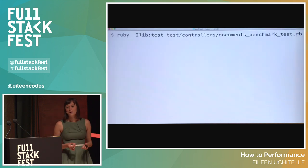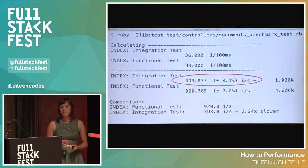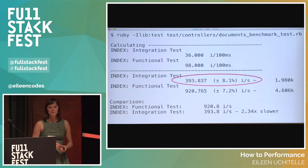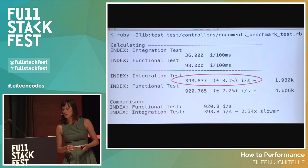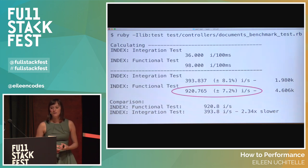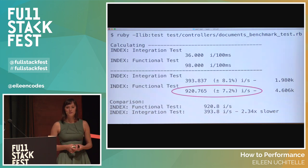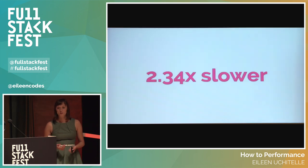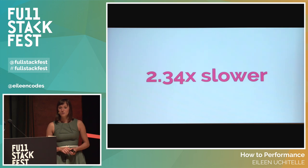We can then run this like any other test. It tells us that we were able to get 393 iterations of integration tests, give or take 7–8%, and we were able to run 920 controller tests, give or take 7%, in the same one second. The data shows integration tests are 2.34 times slower than controller tests. That's a huge difference, and running that on your app would make you sad.